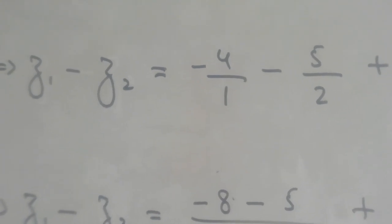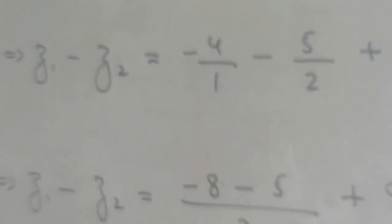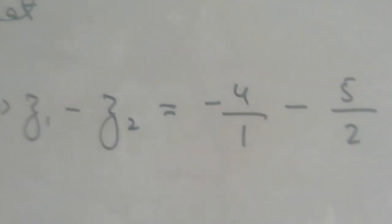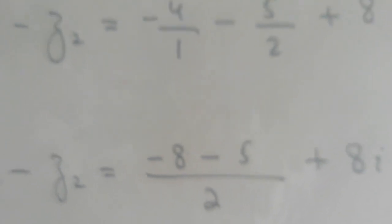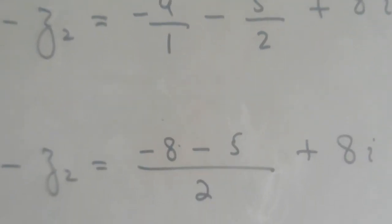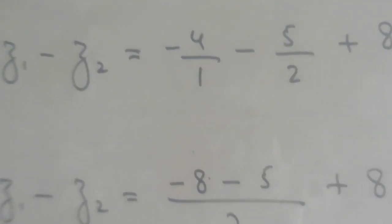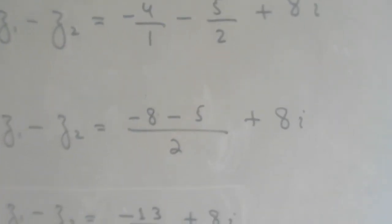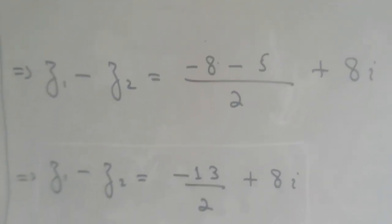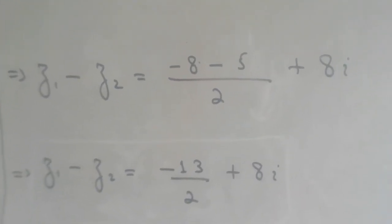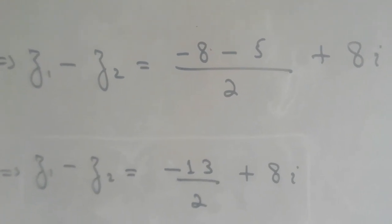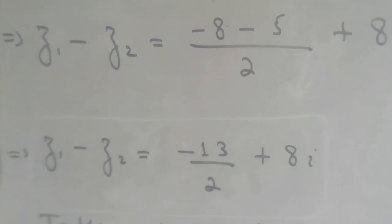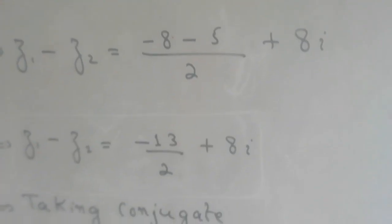Taking LCM: minus 4 upon 1 minus 5 upon 2. LCM is 2. So 1 times 2 divide, giving 4 times 2 equals 8. Then 2 divided gives 1, and 1 times 5 equals 5. So we get minus 8 minus 5 upon 2, plus 8 iota. Therefore z1 minus z2 equals minus 13 upon 2 plus 8 iota.